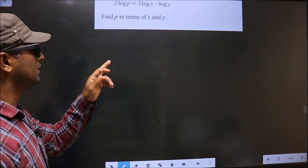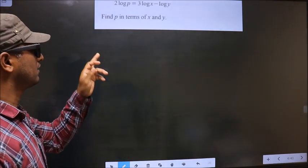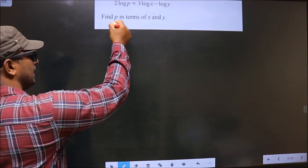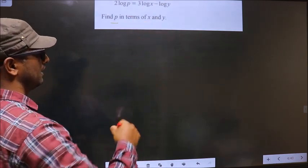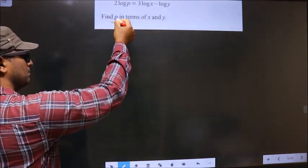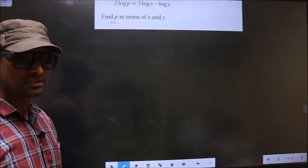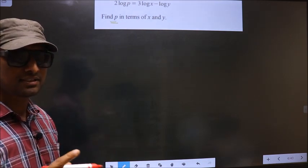2 log p equal to 3 log x minus log y. Find p in terms of x and y. We should find p. That means we should make p the subject.